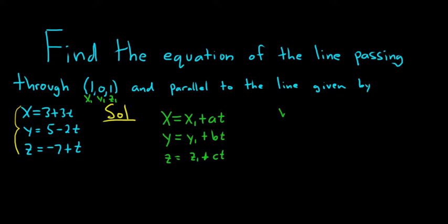And then the a, b, c, those are called direction numbers. So v is called a direction vector. It's a vector that's parallel to our line. And a, b, and c are called direction numbers.